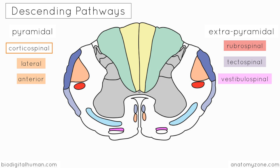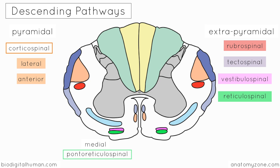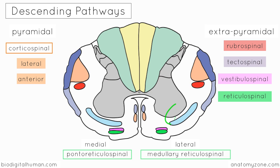Lastly, we have the reticulospinal tract, which arises from the reticular formation of both the pons and the medulla. You've got a medial or ponto-reticulospinal tract, highlighted here in green, and the medullary reticulospinal tract — the lateral reticulospinal tract — whose fibres run in this region here. The reticulospinal tract is responsible for reflexes and muscle tone, and is also involved with the respiratory and circulatory systems.